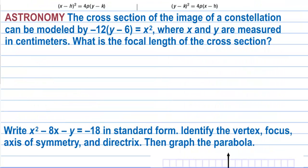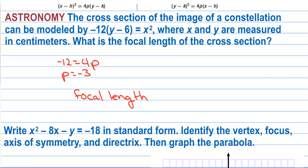The cross-section of the image of a constellation can be modeled by −12(y − 6) = x², where x and y are measured in centimeters. The focal length is the distance from the vertex to the focus, which is p. So −12 = 4p, giving p = −3. The focal length is 3 centimeters.